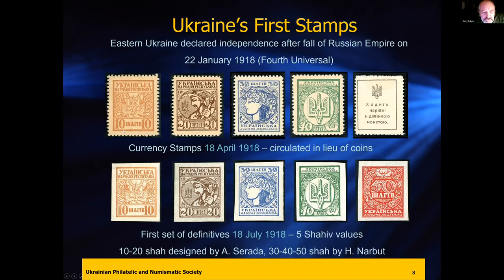The first stamps were not really postage stamps — they were currency stamps printed on cardboard. They were used instead of coins because metal was very precious at the time, required for military purposes. On the back, it stated that these stamps were used in lieu of coin. A few months later, they were reprinted on paper and issued as the first set of definitives. The graphic artists were Anton Sereda for the first two — the Shah is worth around one cent, with 100 Shahs in one hryvnia — and Hryhorii Narbut designed the last three.